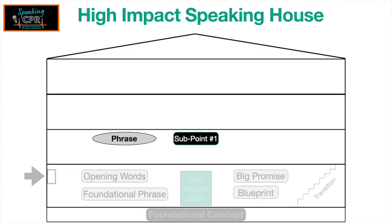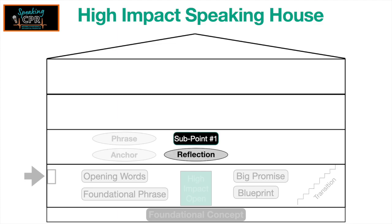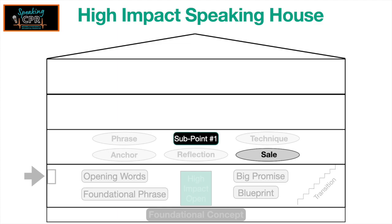That is how you create the first floor in your speaking house — the PARTS formula. Come up with a short phrase that sums up the message of that first point, use some kind of anchor, ask the reflective question, give them a technique to use, and sell them on the idea by showing the benefit that you or a client received by using this specific idea.